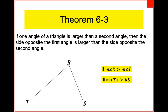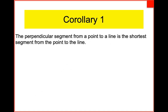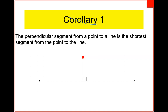Two quick corollaries — we're not going to prove these because they're very easily proven and we've proven something similar before. Corollary one: if you have a point and want to measure the distance from the point to a line, it's a perpendicular segment. This is the classic saying in everyday English that the shortest distance between two points is a straight line — in our case it's a perpendicular segment from the point to the line.